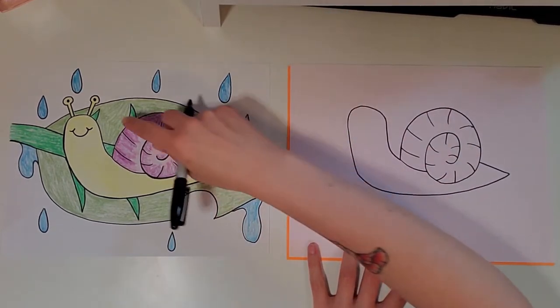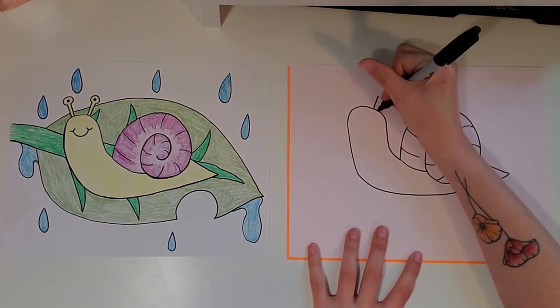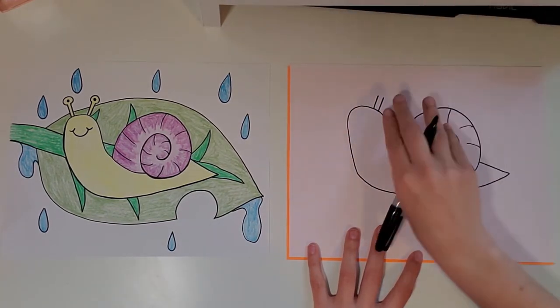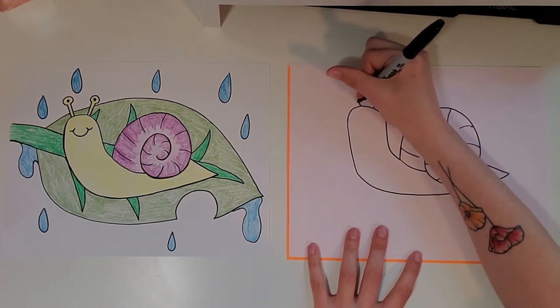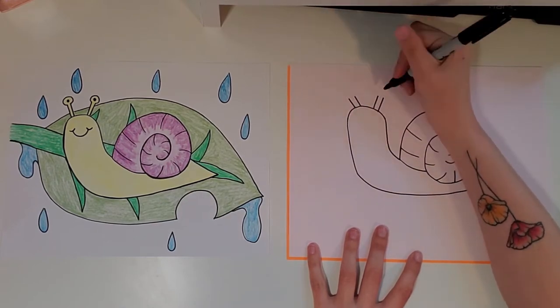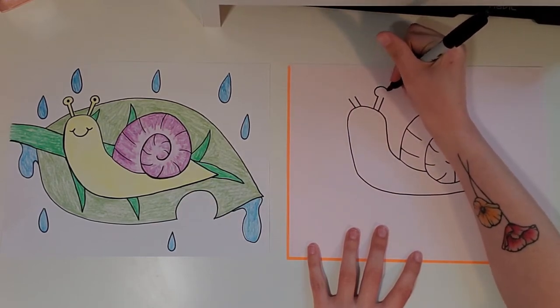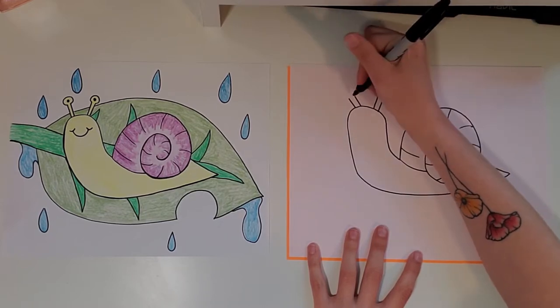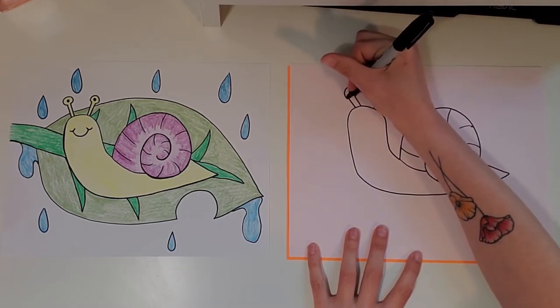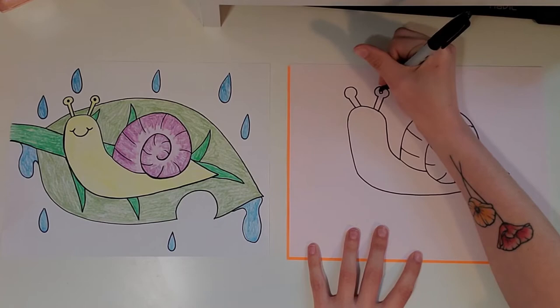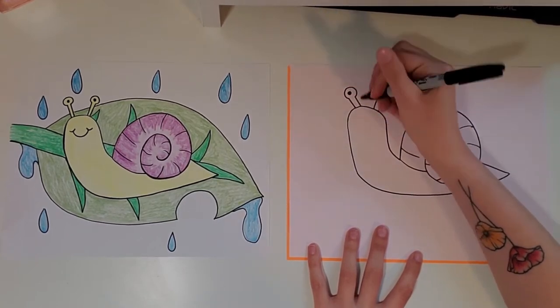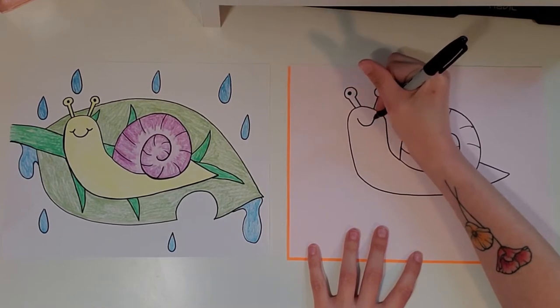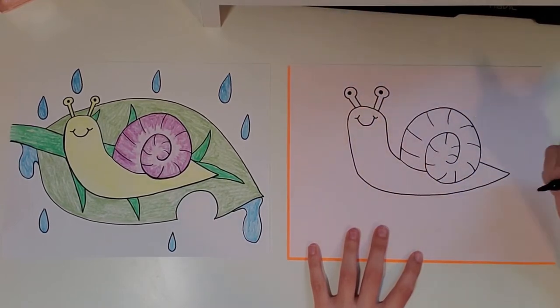Now we're going to add these little stalks with the eyes. So we're going to do two straight lines kind of angled that way and then two more straight lines angled the other way and then make an oval or a circle on top. You can draw two little black circles inside for the eyes. And then I gave my snail a smiley mouth like that.